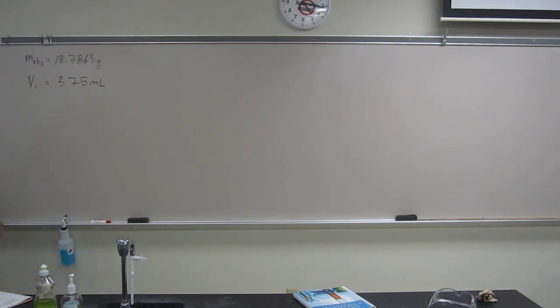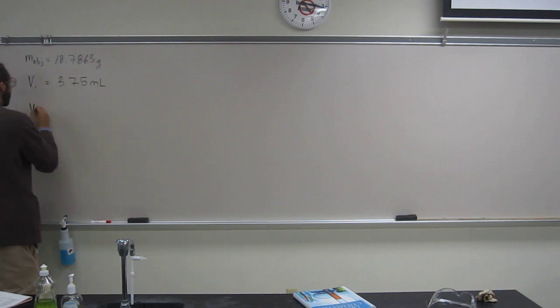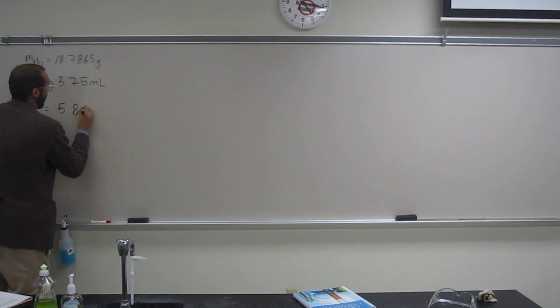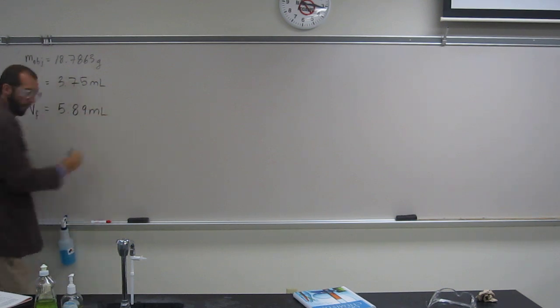And it says the new volume is 5.89 milliliters. So it asks, what's the density of the metal object? And which measurement, mass or volume, limits the number of significant figures?